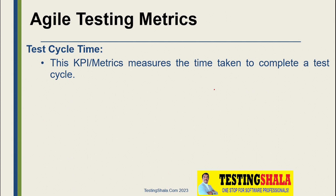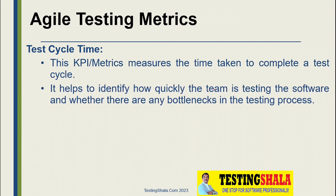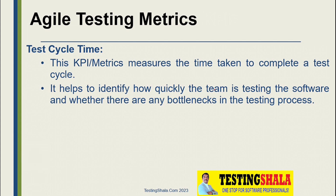The next metric is test cycle time. This measures the overall time taken to complete one testing cycle. It gives us an indication of where issues and bottlenecks are being faced by the testing team and the overall processes. This helps us optimize overall processes and support the testing team in completing the testing cycle on time.